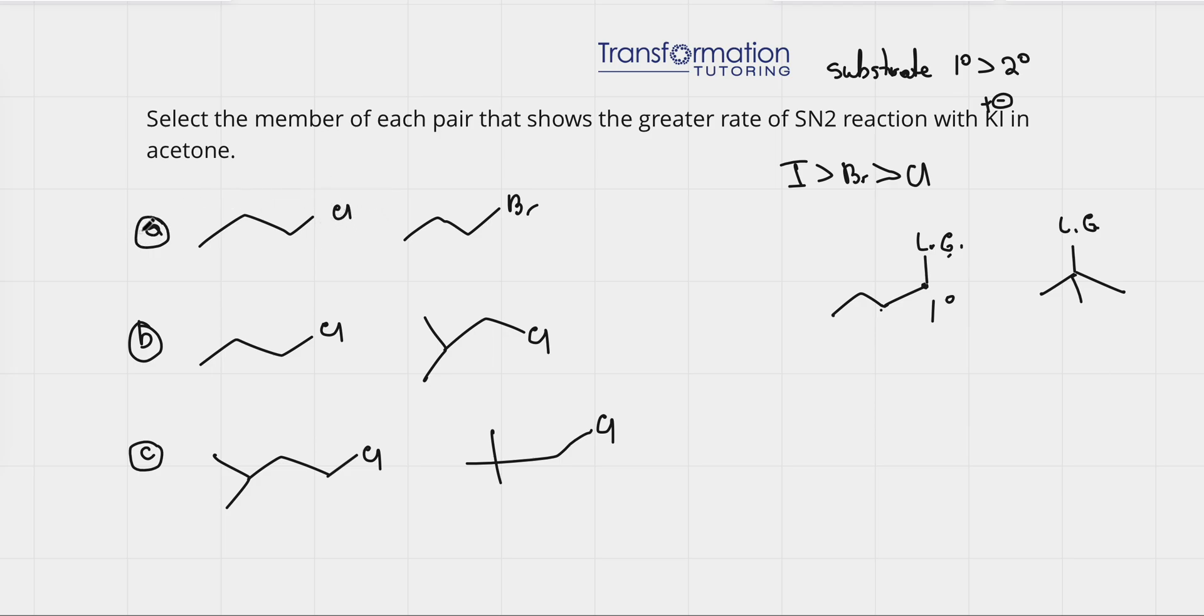So, the difference in A, we can see that here we have a chlorine leaving group, and here we have a bromine leaving group, and that's the only difference. So, that must be what we must base our decision on. Now, who is a better leaving group, chlorine or bromine? We said bromine is a better leaving group, so bromine is going to win, and we're going to say this is going to be the substrate that will have a greater rate in SN2 reaction.